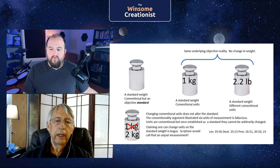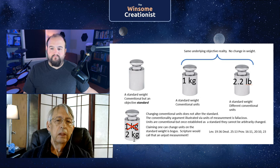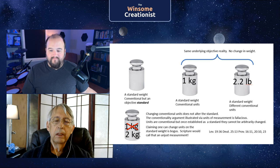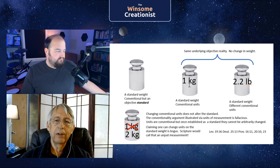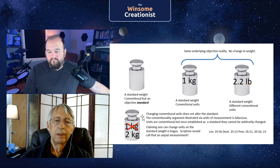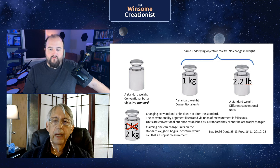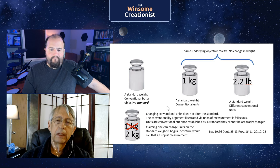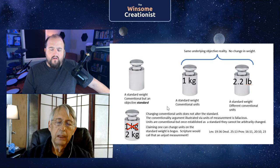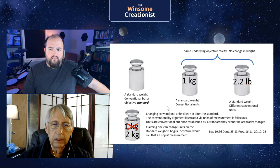But once you've established a standard as the unit of measure, you don't change the standard. If this were a one-kilogram weight, you can label it one kilogram, and we know one kilogram is the same as 2.2 pounds. If the conventionality support that ASC advocates appeal to were true — well, you're not changing anything. One kilogram changed to units is 2.2 pounds; you have the same underlying objective reality and no change in weight. You can't relabel a standard arbitrarily. The conventionality of units does not support the ASC thesis.